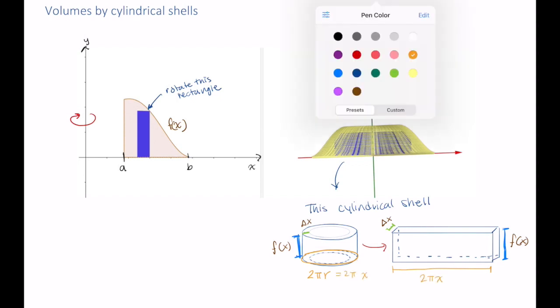Great! That tells me that the volume of this rectangular prism is just 2 pi x f of x times delta x.